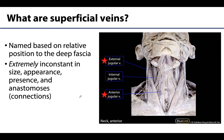Superficial veins are called superficial veins based on their location and relative position to the deep fascia, so we should be familiar with what the deep fascia is at this point. If not, please make sure you review that lecture video. Sometimes you can see portions of the superficial veins through the skin. You don't want to see all of these superficial veins — we'll talk about why that is in a moment — but they are close enough to the skin to be able to see a little bit of that.